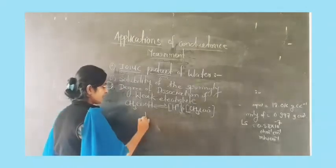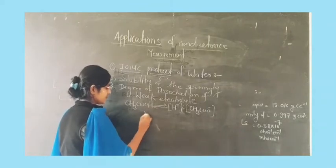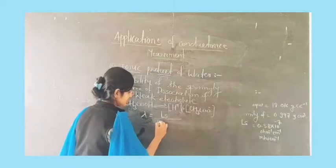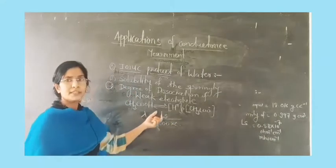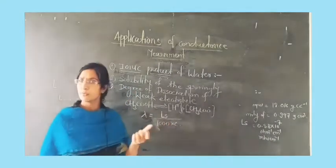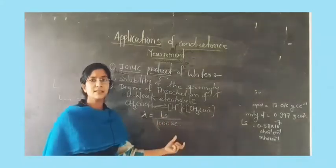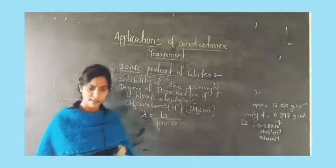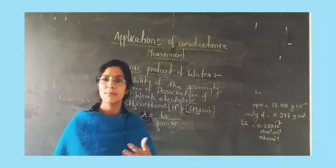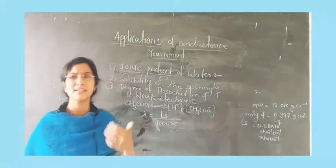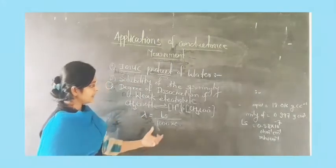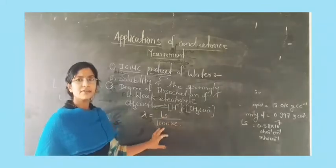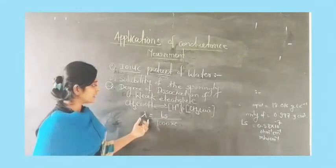In this case, we find out lambda, where lambda equals specific conductance divided by 1000 times c. We measure the specific conductance and choose a concentration — for example, 0.1 molar — and by using this equation we are able to find out lambda.